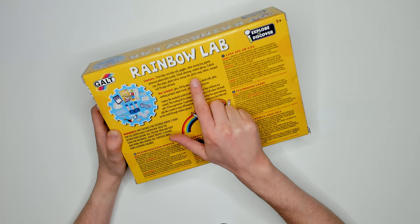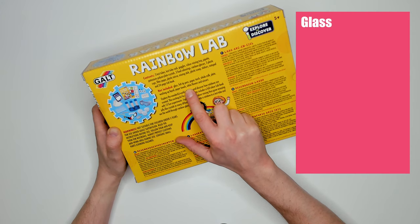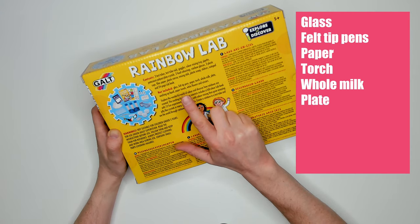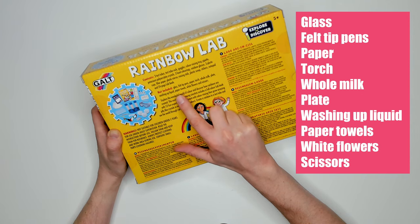On the back of the box it tells you the things that you need in addition to the items that are in the box already. We need glass, felt tip pens, paper, torch, whole milk, plate, washing up liquid, paper towels, white flowers and scissors. That's a lot of extra things.